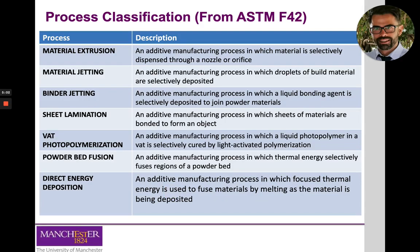We also briefly mentioned the classification of AM processes according to ASTM F42. We are only going to cover some of them. Starting with material extrusion: this process uses thermoplastic materials that can be melted and extruded through a nozzle or orifice onto a building platform, where they solidify. Layers are deposited one on top of the other until a three-dimensional object is obtained.